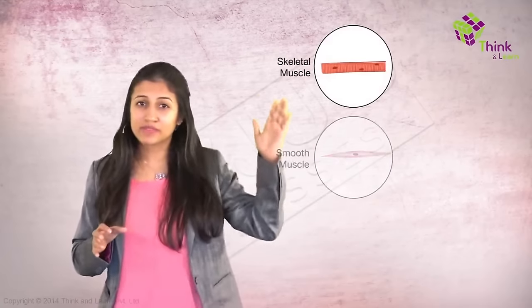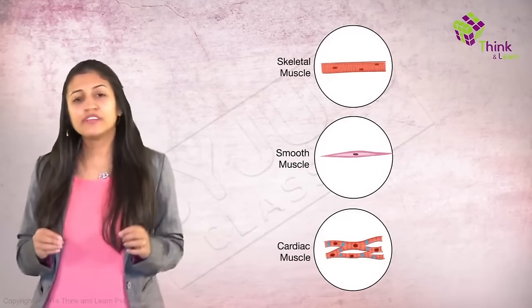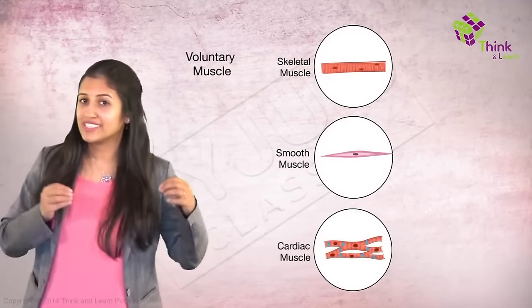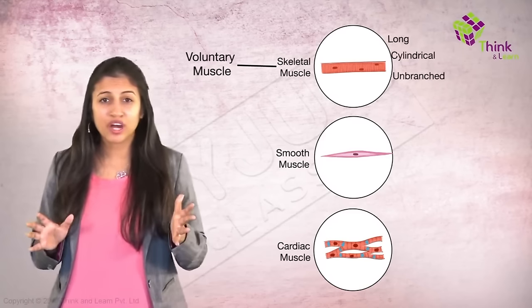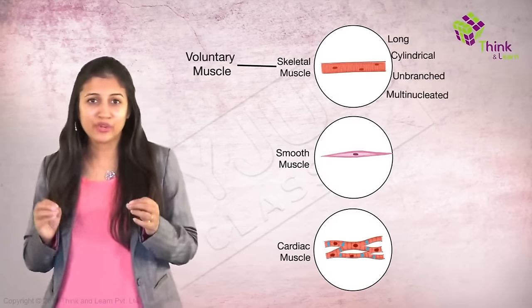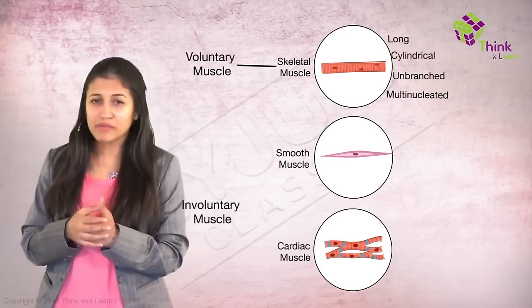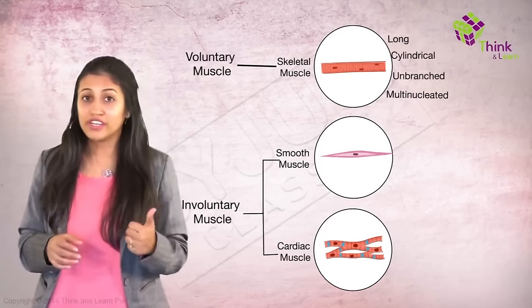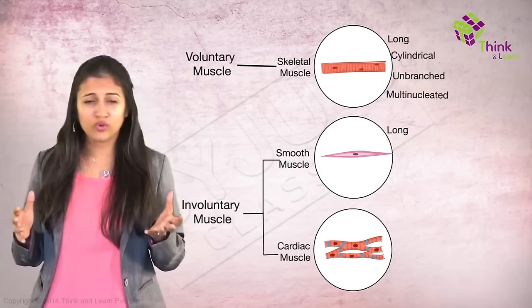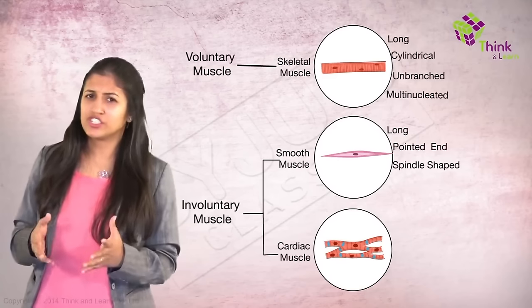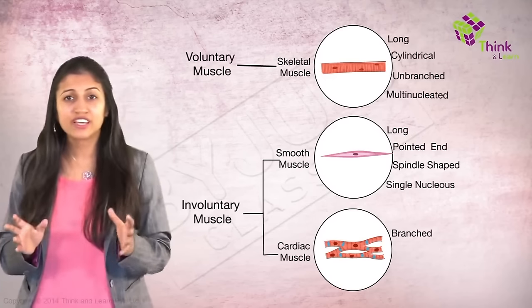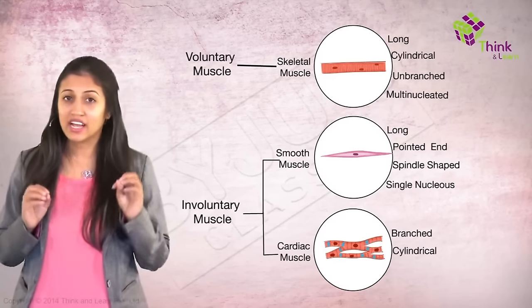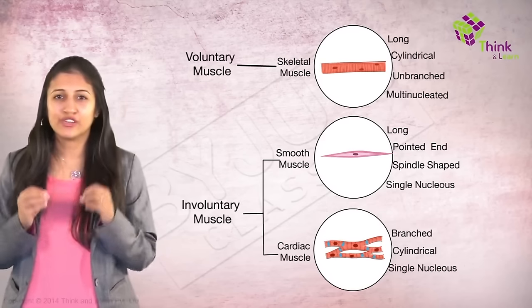So if I were to put these three types side by side, what do I see? Voluntary muscles, also called skeletal muscles - long, cylindrical, unbranched and multi-nucleated. And then I have involuntary muscles of two types. One, smooth muscles that are long with pointed ends, spindle-shaped and they have a single nucleus. And cardiac muscles that are branched, cylindrical and again with a single nucleus.